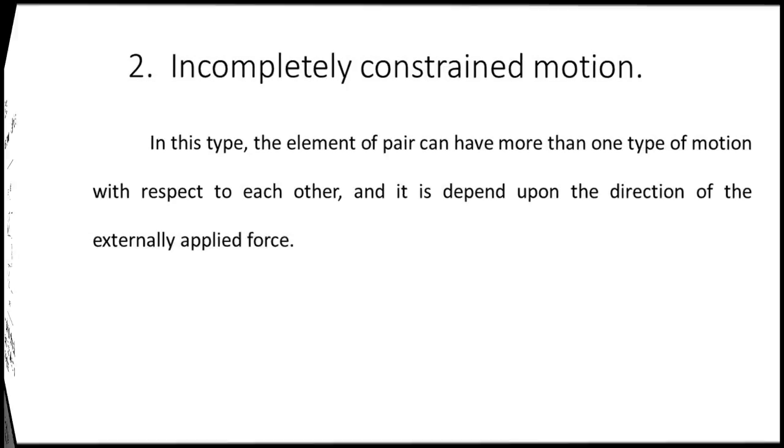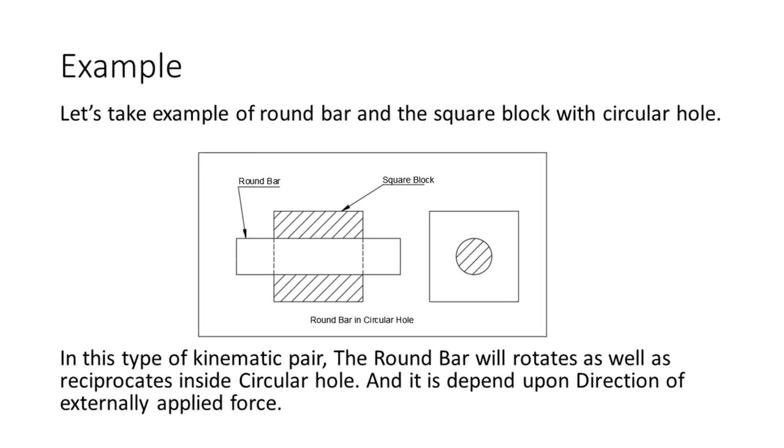Let's see the example. As shown in the diagram, the round bar is placed in a circular hole. This is an example of incompletely constrained motion. So it can rotate and also reciprocate depending upon the applied force. Let's see the animation.